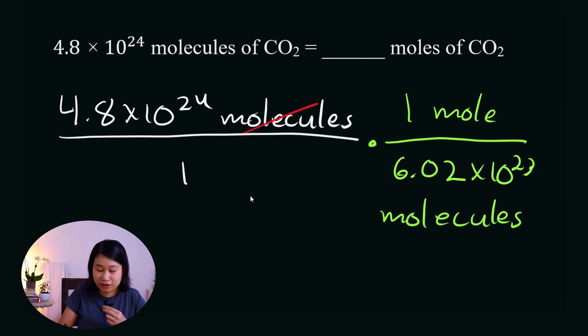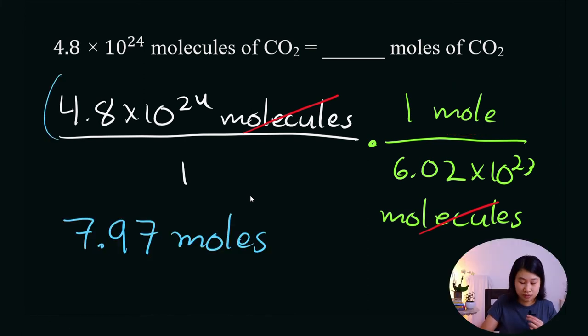Again, I'm going to use this property that 1 mole has 6.02 times 10 to the 23 molecules. Again, I see molecules on the top and on the bottom, which means they can cancel. And now I know I can divide because I'm left with the unit I want, which is in moles. When you do this division, remembering to keep these numbers in parentheses, this is the number you will get.